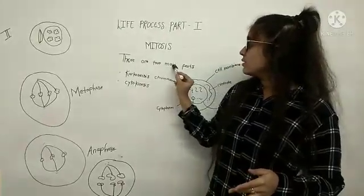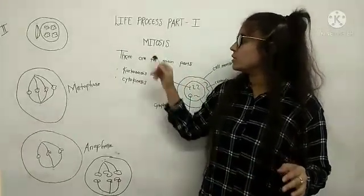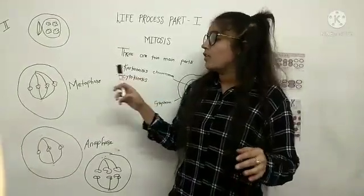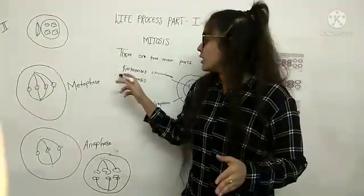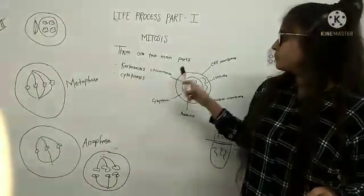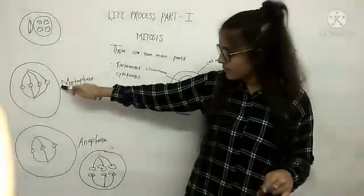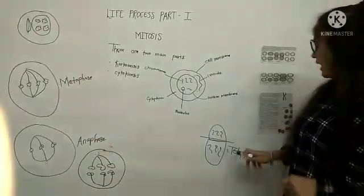This is mitosis. There are two main parts in mitosis: karyokinesis and cytokinesis. We are going to study karyokinesis. In karyokinesis, there are four parts: prophase, metaphase, anaphase, and telophase.